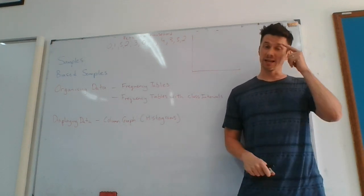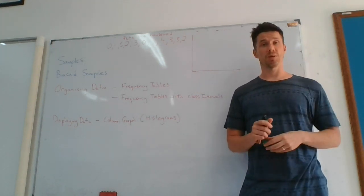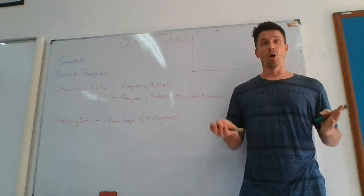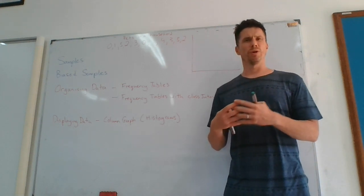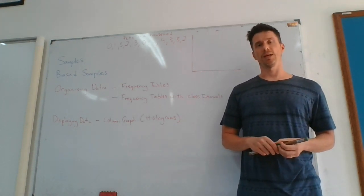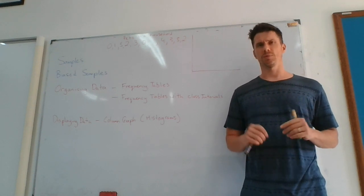Now the problem with sampling is that sometimes they can be biased and they can ask too small of a group, or they can ask the wrong one particular, only one type of the population. So sometimes it can be biased.